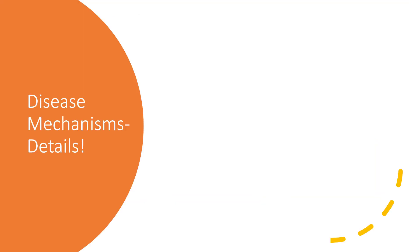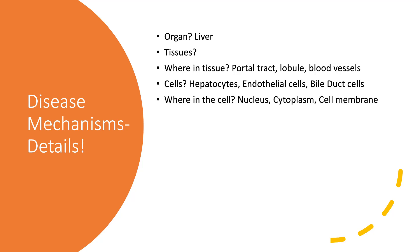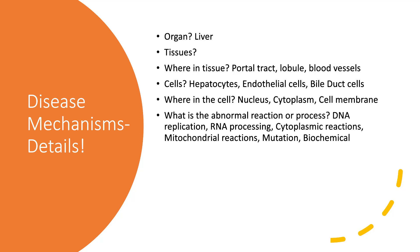For disease mechanisms, you need to learn the details. What organ is affected — for example, the liver? What tissues? Where in the tissue — if you're in the liver, is it the portal tract, the lobule, the blood vessels? What cells are being affected — hepatocytes, endothelial cells, bile duct cells? Where in the cell? Is the disease process affecting the nucleus, the cytoplasm, or the cell membrane? What is the abnormal reaction or process? Is it DNA replication, RNA processing, cytoplasmic reactions, mitochondrial reactions, mutations, biochemical reactions?